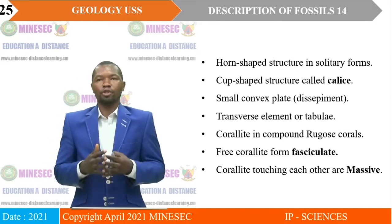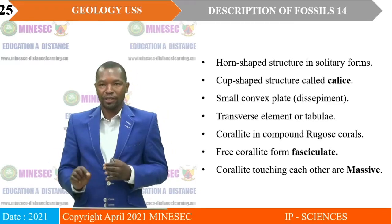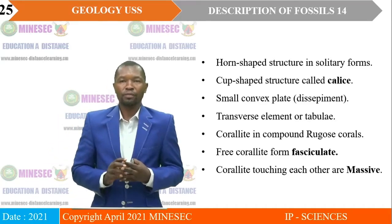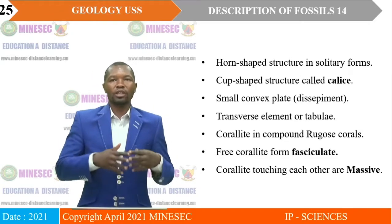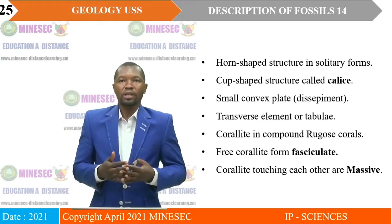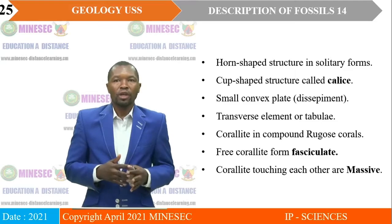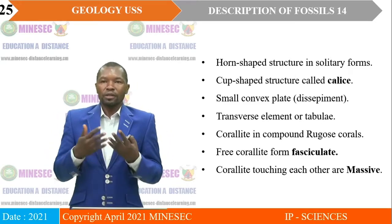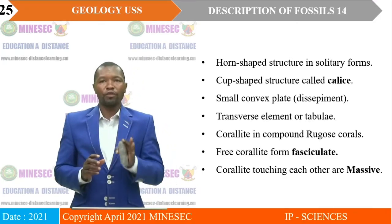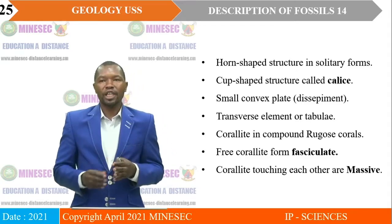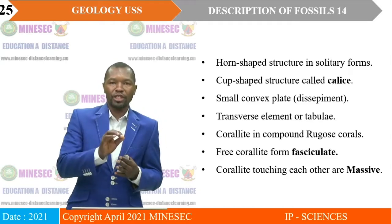They have a horn-shaped structure, especially with the solitary forms. The cup-shaped structure is called the calyx — remember that it is the main diagnostic feature. Then the small convex plates form the dissepiment or cross bars. We have the transverse elements or the tabula. They are also characterized by a corallite, especially in compound Rugose corals. They have a peri-corallite, common with their fasciculate or separate forms — generally referred to as fasciculate. The corallites touch each other and make the whole structure look massive.